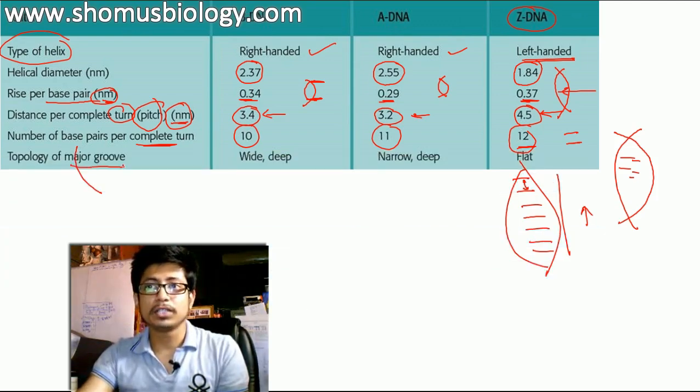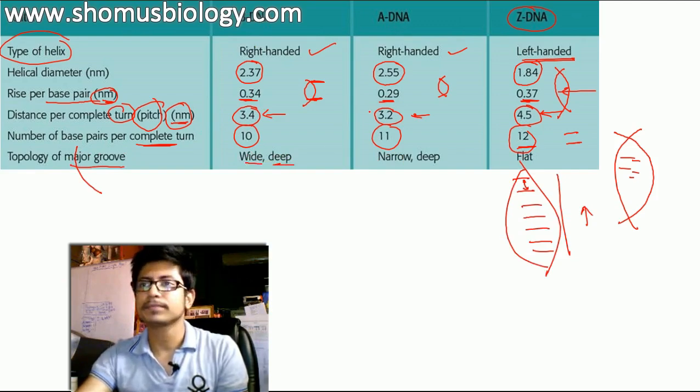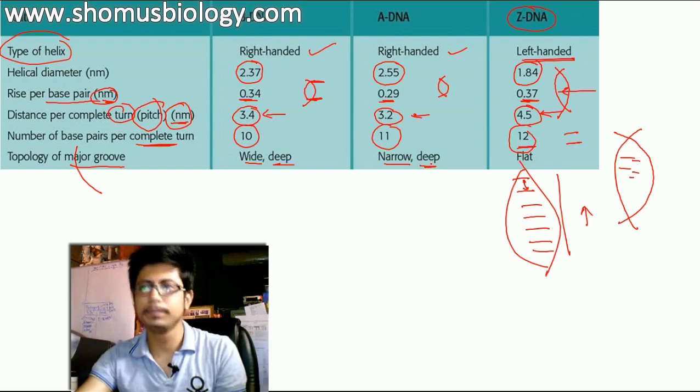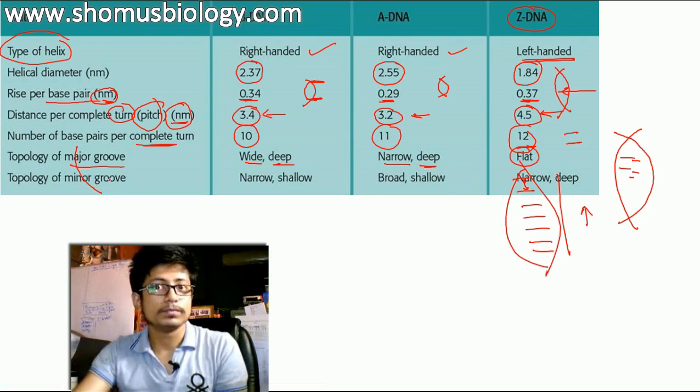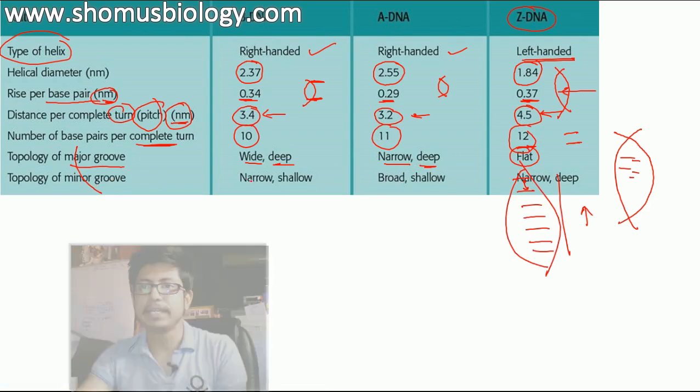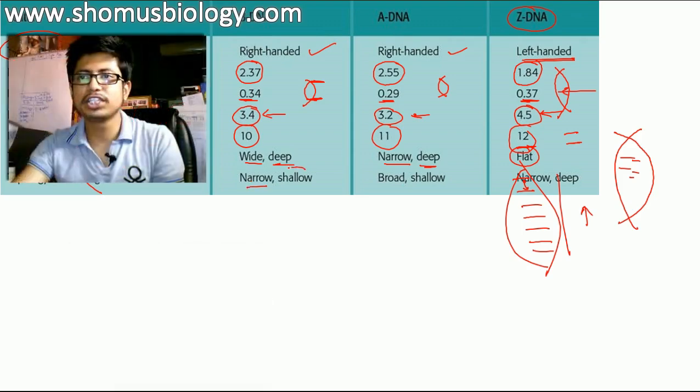Now, topology of the major groove, in case of B DNA, it is wide and deep. In case of A DNA, the major groove is narrow, but deep. For Z DNA, it is flat. In case of minor groove, for B DNA, narrow but shallow. For A DNA, broad but shallow. For Z DNA, narrow but deep.